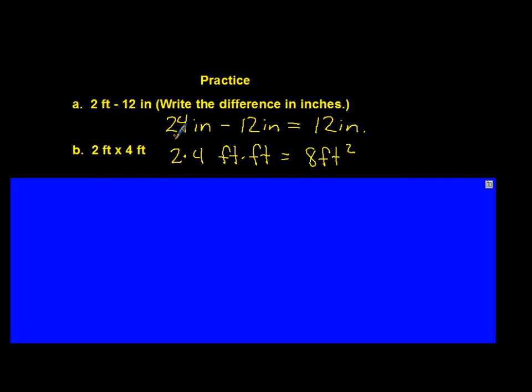And our next one, we had feet times feet. So 2 times 4 is 8, and we get 8 square feet. Again, taking linear feet and changing it into square feet.